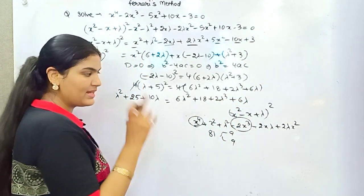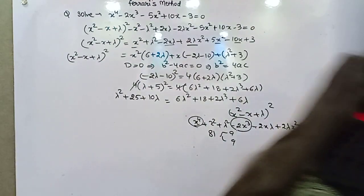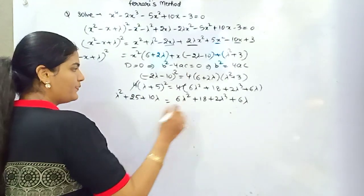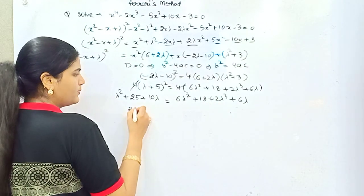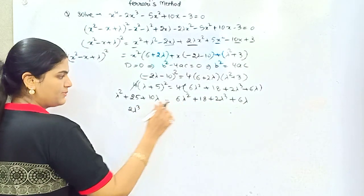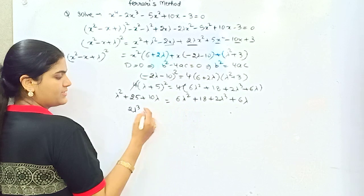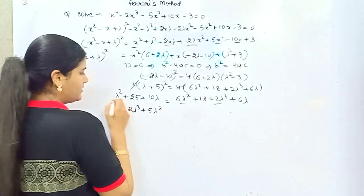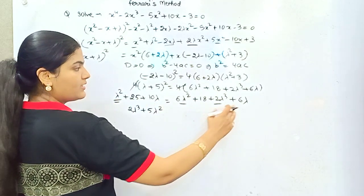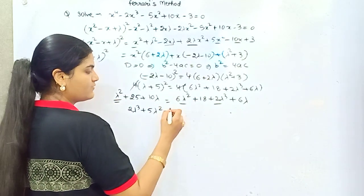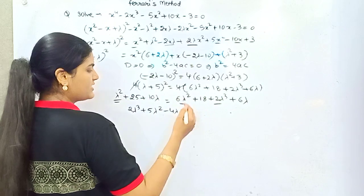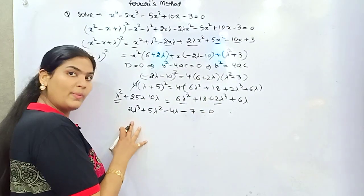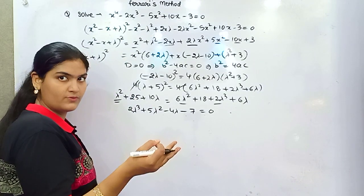Solving for lambda: you get 2λ³ plus 6λ² minus λ² gives plus 5λ², then 6λ minus 10 gives 4λ, and 18 minus 25 gives minus 7. So the cubic equation in lambda is 2λ³ + 5λ² + 4λ − 7 = 0. Since this is a cubic equation you will have three roots.